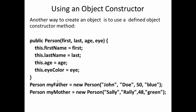The way I use this object constructor is given in the next two lines. I can define a person variable called myFather, and he's assigned a new Person John Doe, 50, blue. I can declare another variable of class Person to be a new Person, first name Sally, last name Raleigh, age 48, eyes green. I now have two person objects.